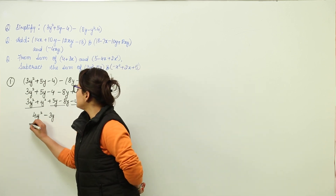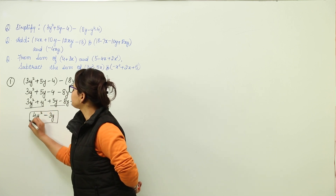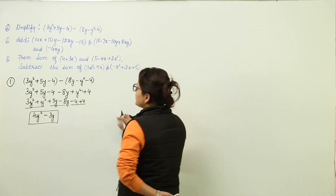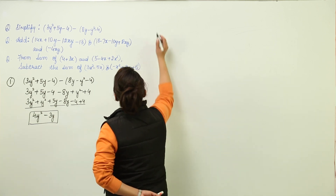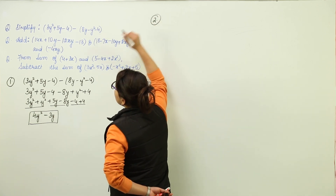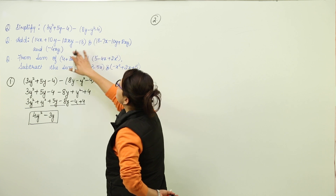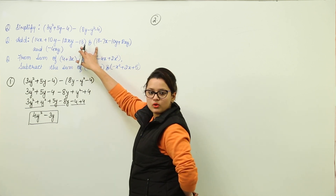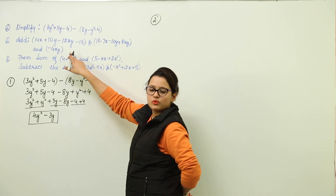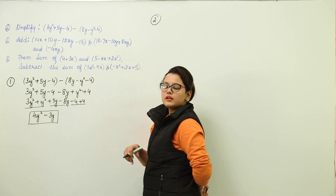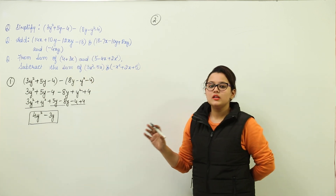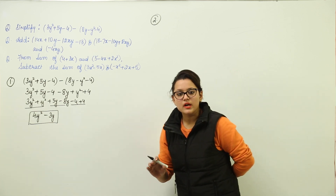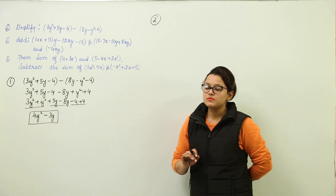So we write 4y squared minus 3y as our simplified answer, and we can skip writing the zero term. The second part requires adding three expressions together — the first two are polynomials and the third is a monomial. Remember, when adding or subtracting algebraic expressions, you can only add and subtract like terms.